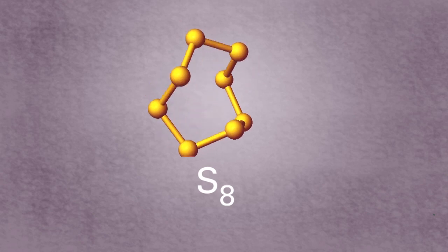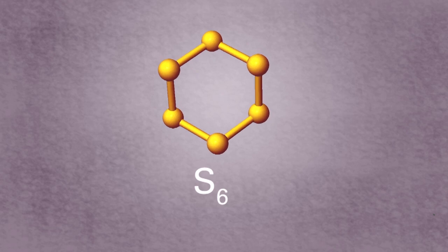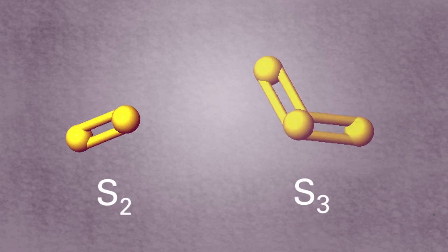Another solid allotrope of sulfur is hexasulfur, S6. Sulfur can also exist as a gas: disulfur and trisulfur.